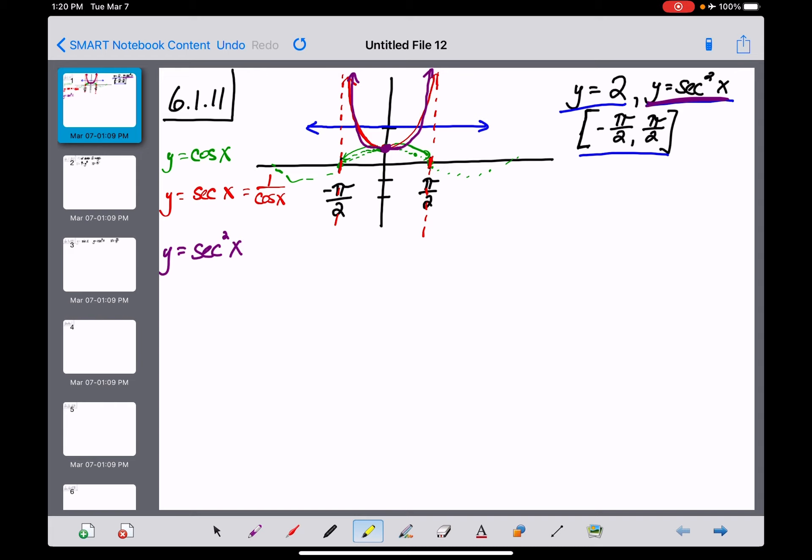If I've drawn this correctly, the pi over 2 and negative pi over 2 aren't really that important because I think I'm looking at this spot here. I want to know exactly what these x values are where y equals 2 intersects the graph of secant squared of x. So I'll set those equations equal to each other. Secant squared of x equals 2.